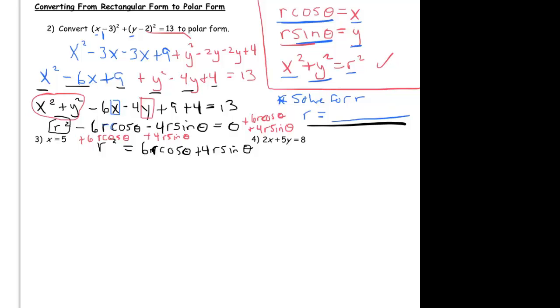Now I'm almost done, what I really need to do now is just to solve for r. And I do that by, well, I can first try to solve for this r squared here. So r squared equals, so I'm going to add 6 r cosine to both sides and I'm going to add 4 r sine theta to both sides.